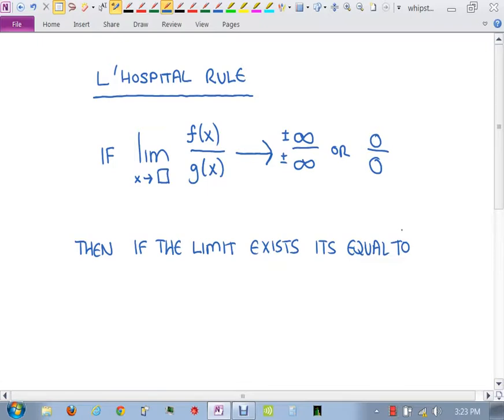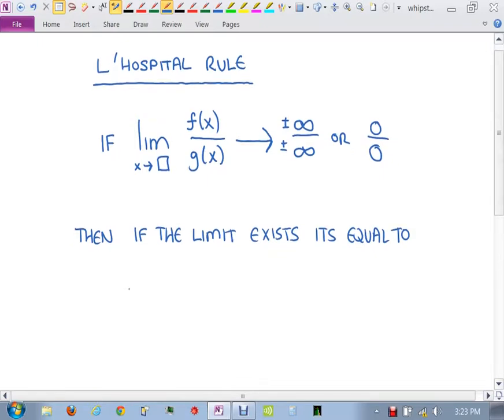So he's saying, look, if you ever get infinity over infinity or 0 over 0, then if there is an answer, if you can get an answer, instead of looking at that limit, you can look at this one. The limit as x goes to 0 or x goes to something of f prime of x over g prime of x. So somehow there's a very strong relationship between the function f divided by g and how that behaves compared to how their derivatives behave as a quotient.